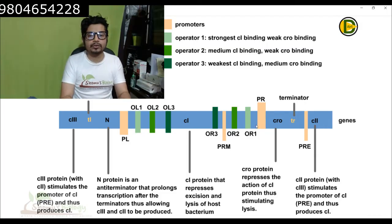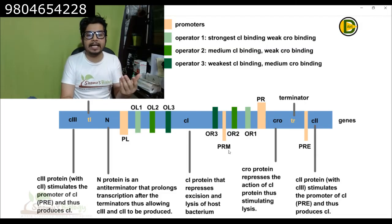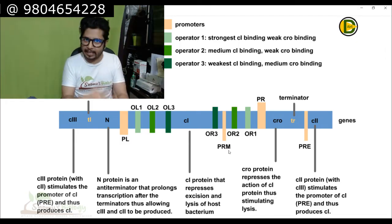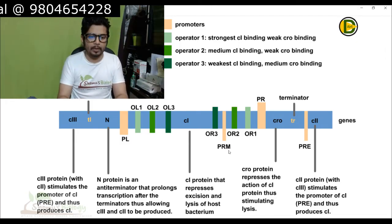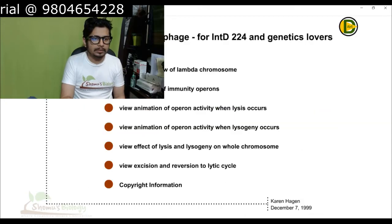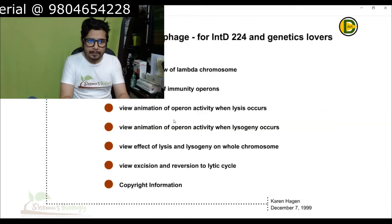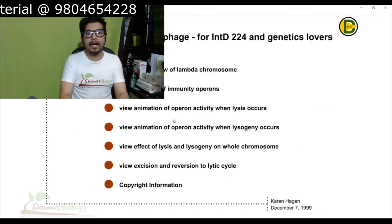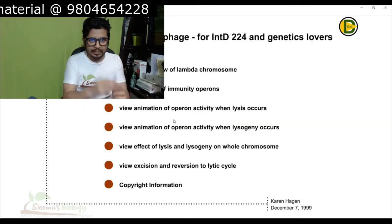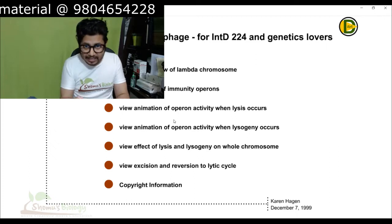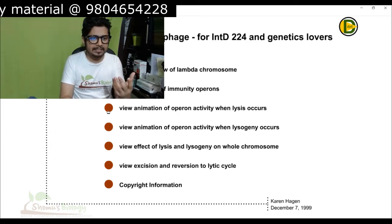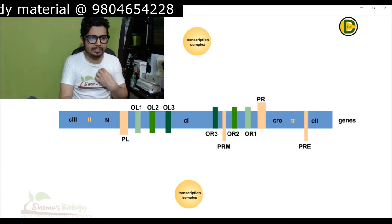To summarize: C1 is for lysogeny, CRO is for lytic, and N protein is an anti-terminator required for lytic cycle progression. PRE and PRM are both promoters from which C1 protein can be made. Now let's move on to the animated lecture portion regarding the lytic cycle and lysogenic cycle — what happens in lysis and lysogeny.